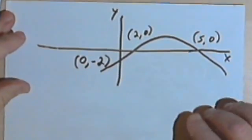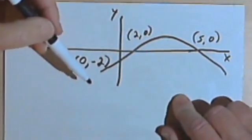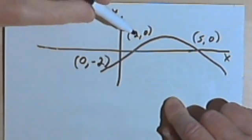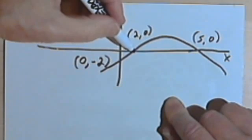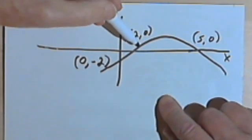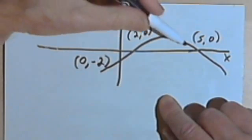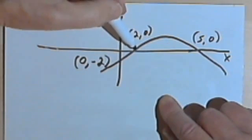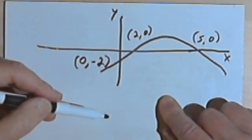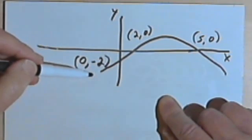Let's say I've got this graph. This graph is a downward-opening parabola. It goes through the horizontal axis, the x-axis, at the point where x equals 2 and x equals 5. So what we know is that there are two roots to the equation, and the roots are 2 and 5. It also goes through the vertical axis, the y-axis, at the place where y equals negative 2.